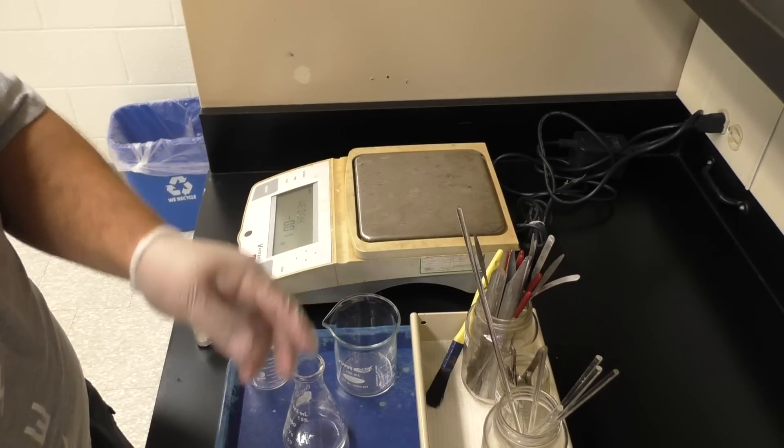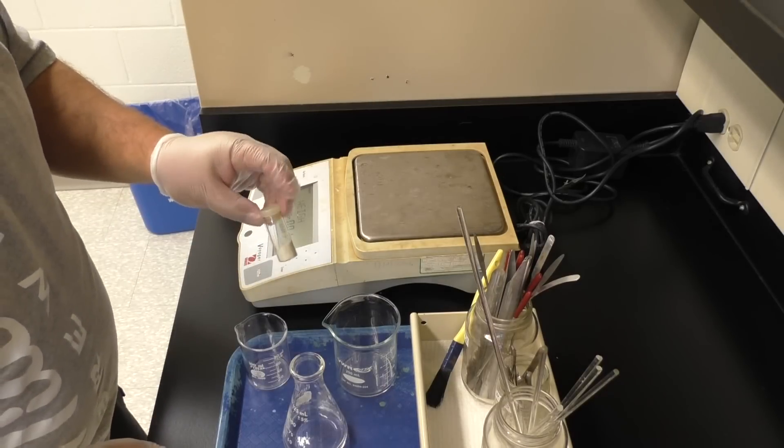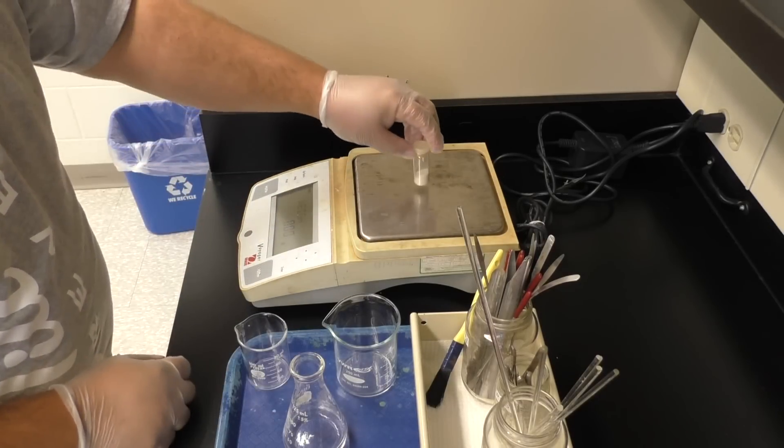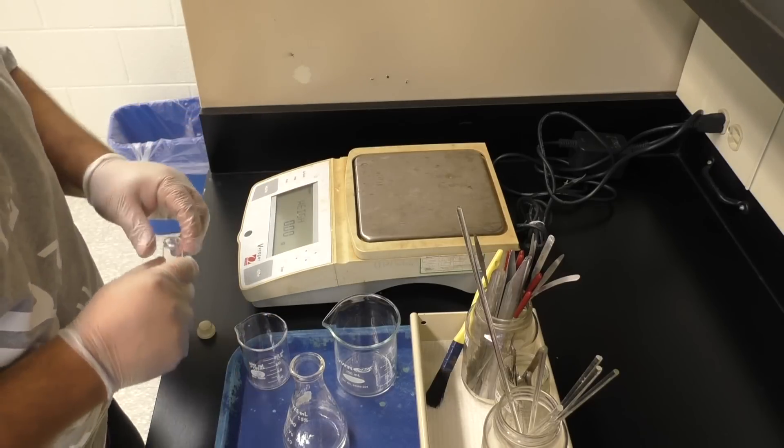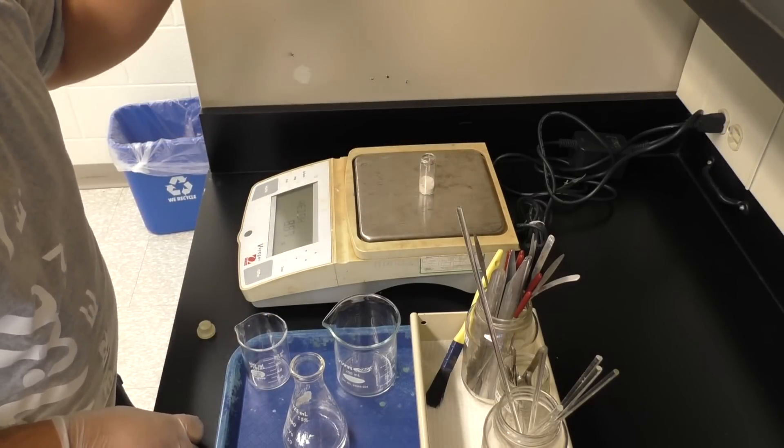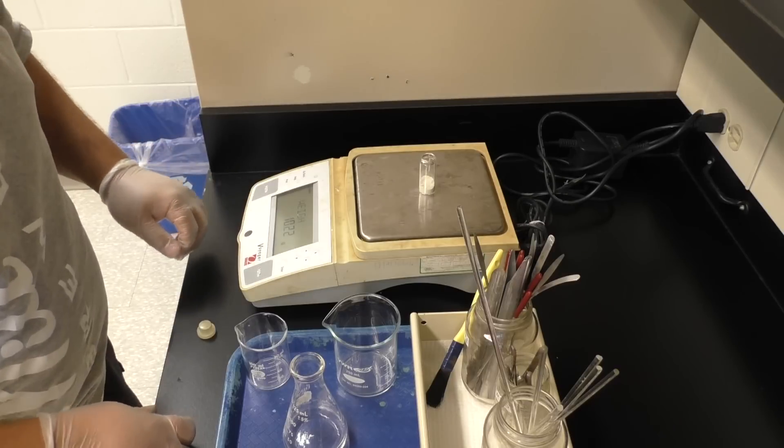And as far as getting your unknown out, so for weighing by difference, you're going to weigh the initial sample, including the vessel that it's in. If you do it without the cap, make sure you're later weighing without the cap.